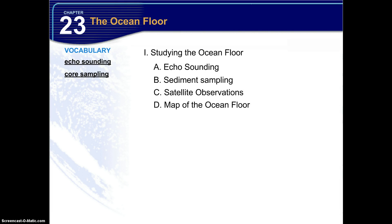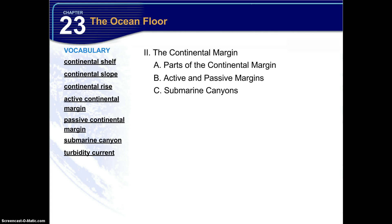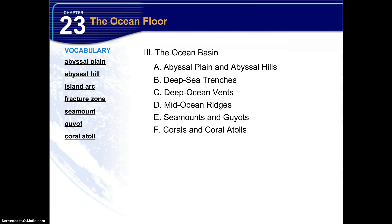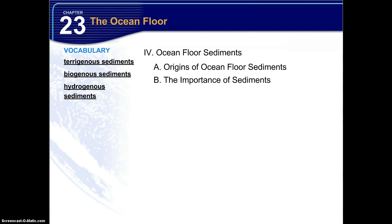Overall in chapter 23, we started by studying the ocean floor — echo sounding, sediment sampling, satellite observations, and mapping the floor. Then we walked through the continental margin, its parts, active versus passive margins, and submarine canyons and turbidity currents. Next was the ocean basin: abyssal plain, abyssal hills, deep sea trenches, deep ocean vents, mid-ocean ridges, seamounts and guyots, corals and coral atolls. Finally, we covered the origins of ocean floor sediments and the importance of sediments. That's it for chapter 23.